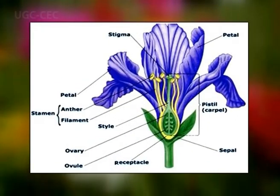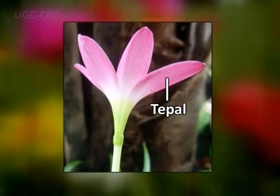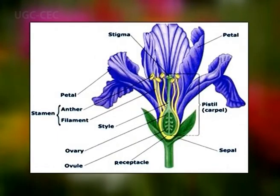Sexual reproduction is the formation of new individuals following the union of two gametes. In plants, the gametes are eggs and sperms, and the structures that produce these gametes are located within the flower. Flowers are the reproductive structures consisting of sterile and fertile parts. The sterile parts are sepals and petals; when these are similar in size and shape they are termed tepals. The fertile and reproductive parts of the flower are the stamens and carpels.